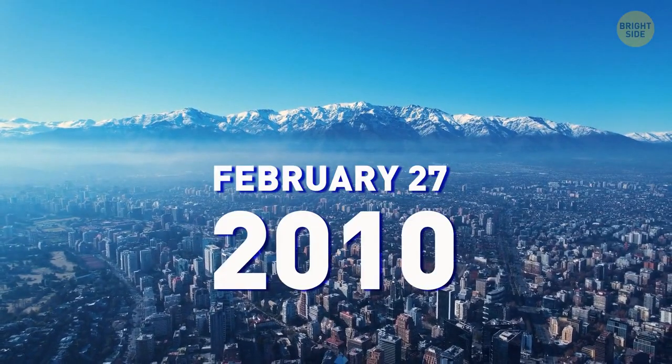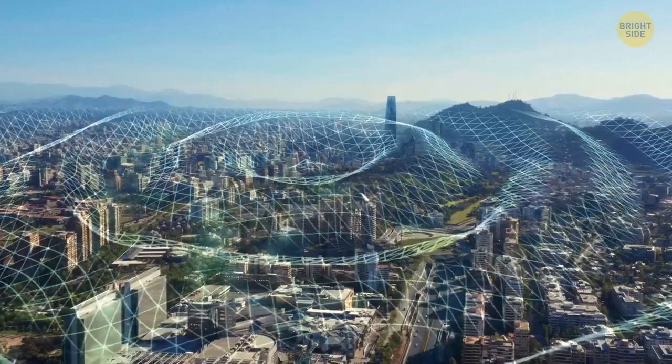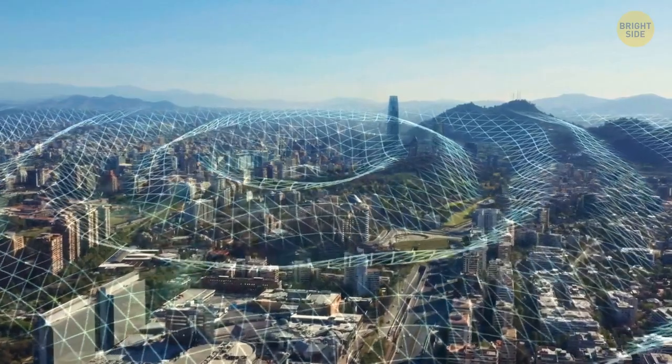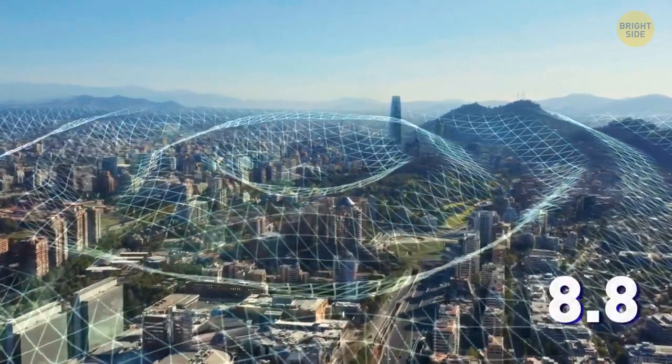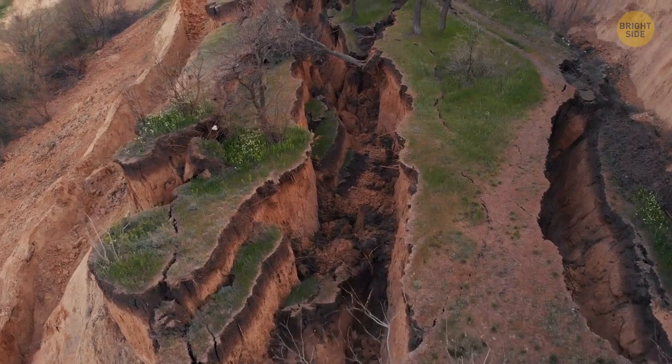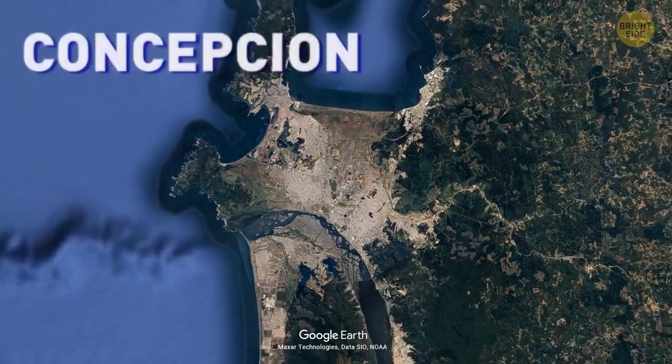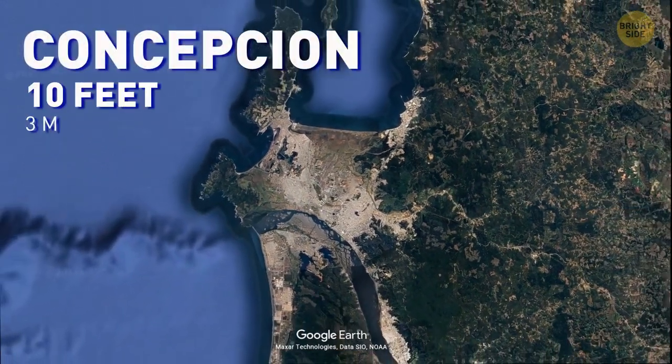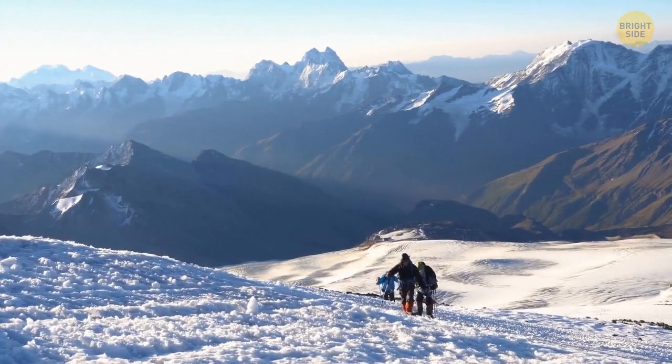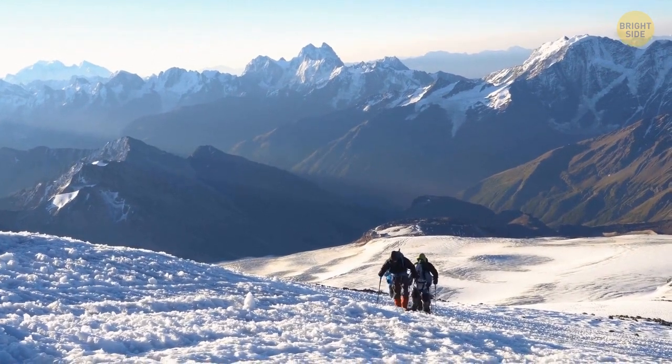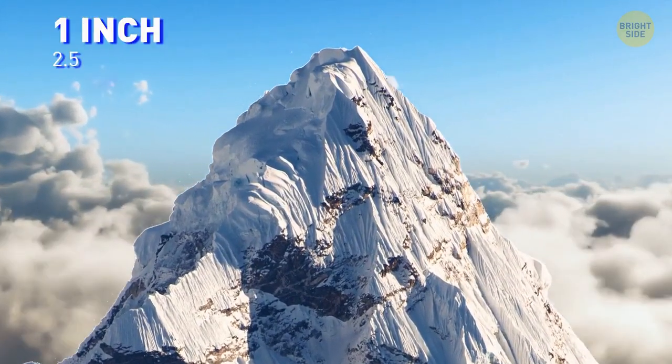On February 27, 2010, a massive earthquake started in Chile. It measured 8.8 on the Richter scale. As a result, Earth's crust in that region was ripped so dramatically that a city called Concepcion moved 10 feet to the west. Another earthquake resulted in the tallest mountain in the world, Everest, shrinking by one inch.